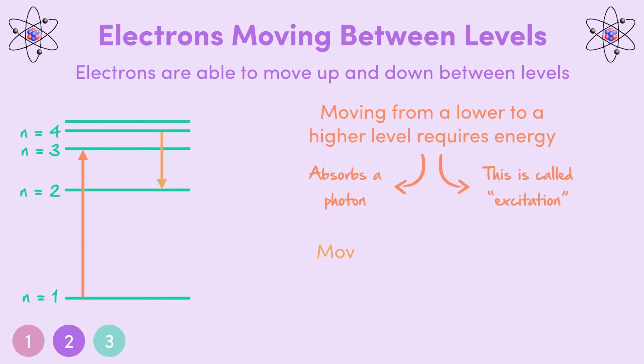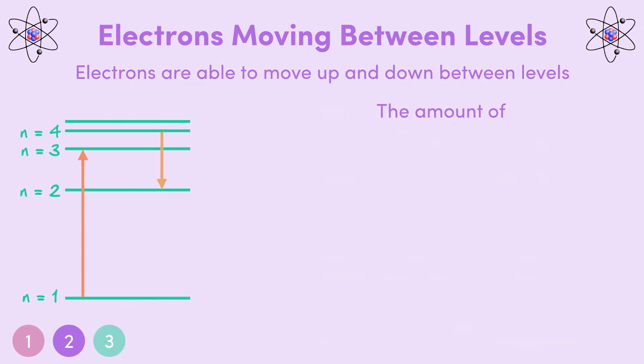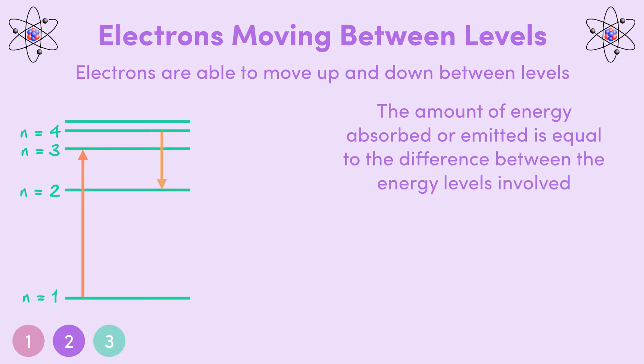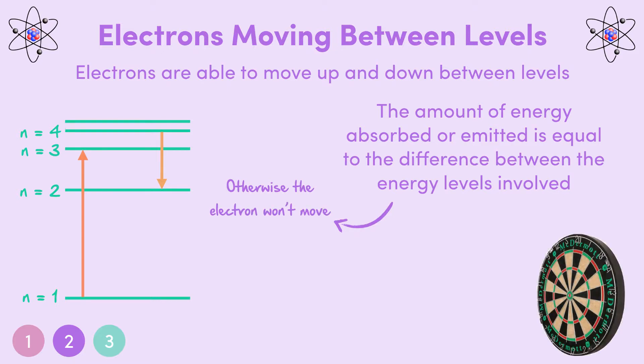On the flip side, if an electron wants to move from a higher level to a lower one, it must lose energy. So it needs to emit a photon. And this is called de-excitation. Something important here is that the amount of energy absorbed or emitted by the electron must be exactly equal to the difference between the energy levels involved. Otherwise, the electrons won't move. Think of it like trying to hit the bullseye on a dartboard. If you throw it too high or too low, you'll miss. So it needs to be at the perfect height, just like the electron needs the perfect amount of energy.